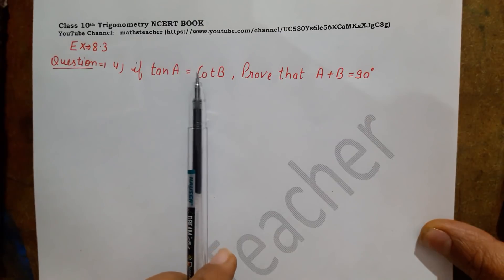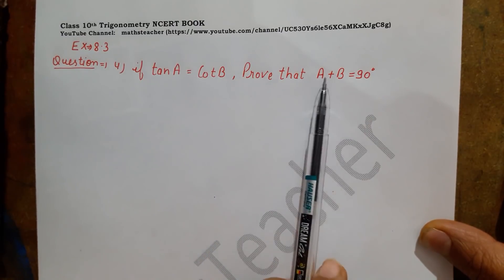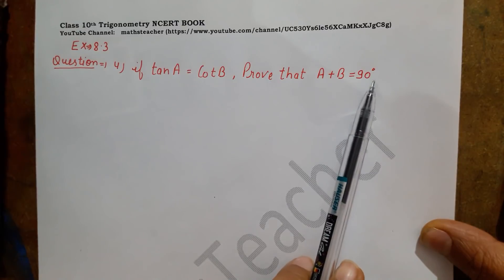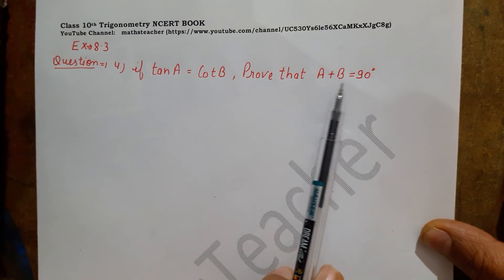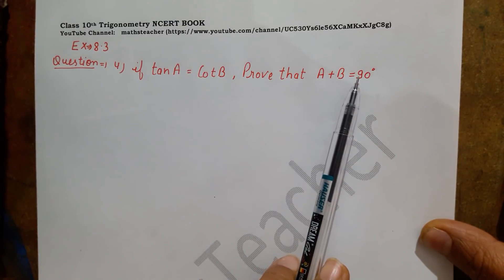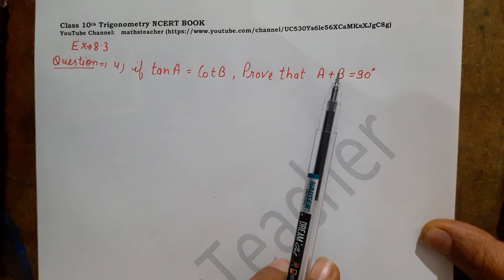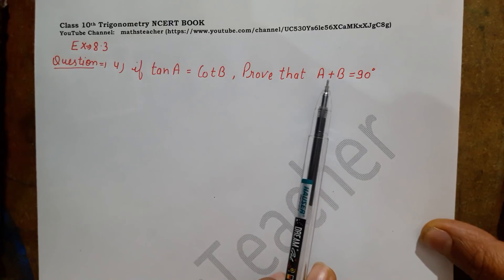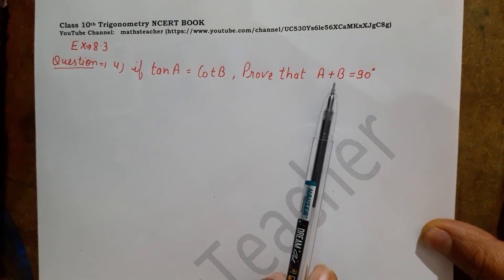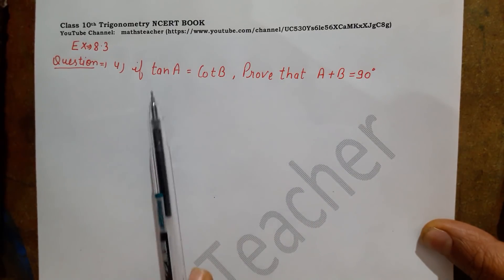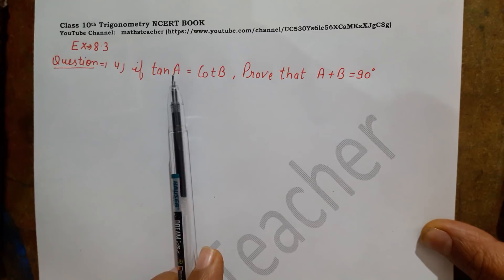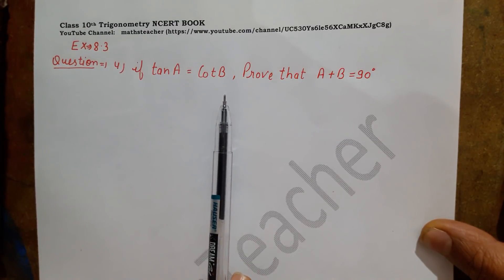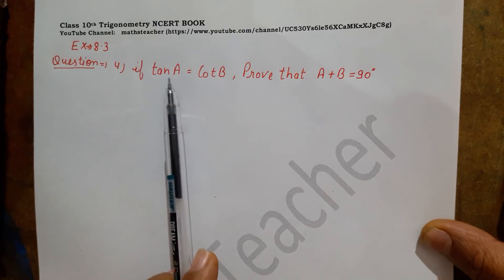So here the hint is: we need to use a complementary angle identity. If the sum of two angles is 90 degrees, that means the two angles are complementary. So what we have to do here is write either A or B as a complementary angle.